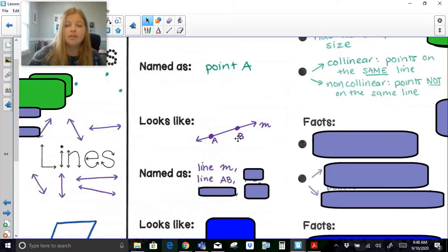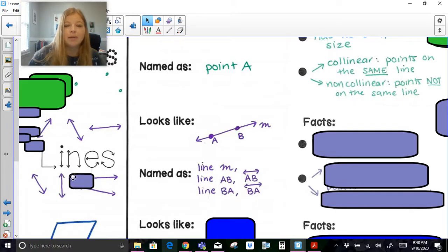There's really a lot of different ways I could name this figure here. I could call it line M. I can call it line AB. I've got two points on this line AB and I can call it line AB. I can also call it line BA. It doesn't matter. You don't have to go from left to right. It could be right to left.